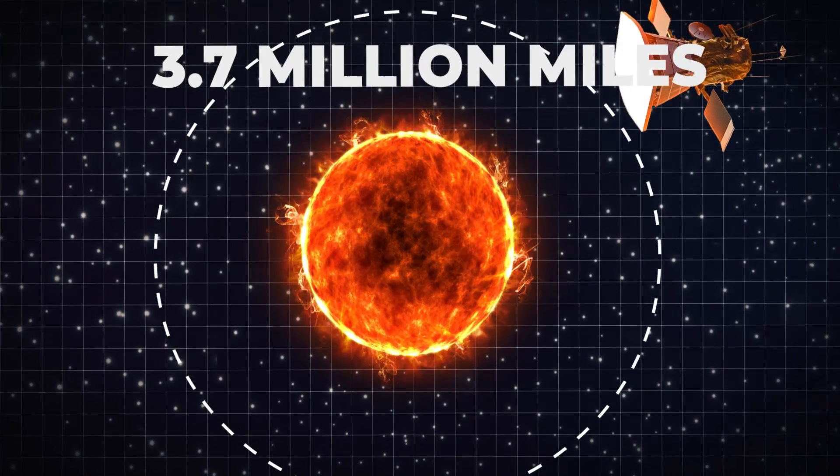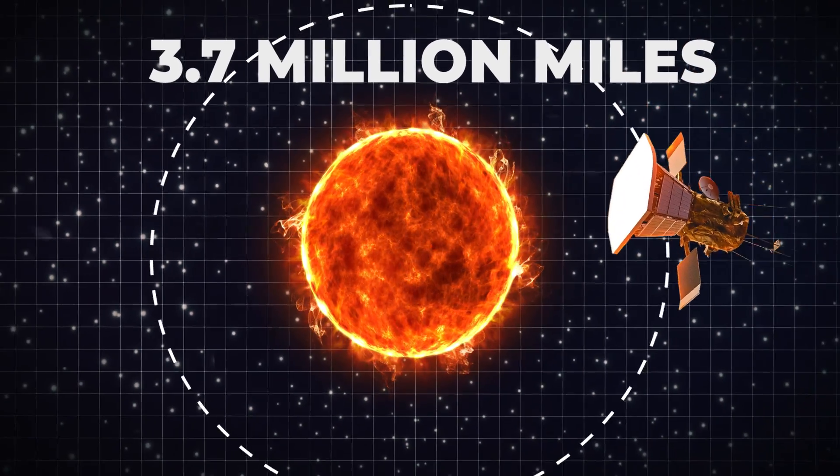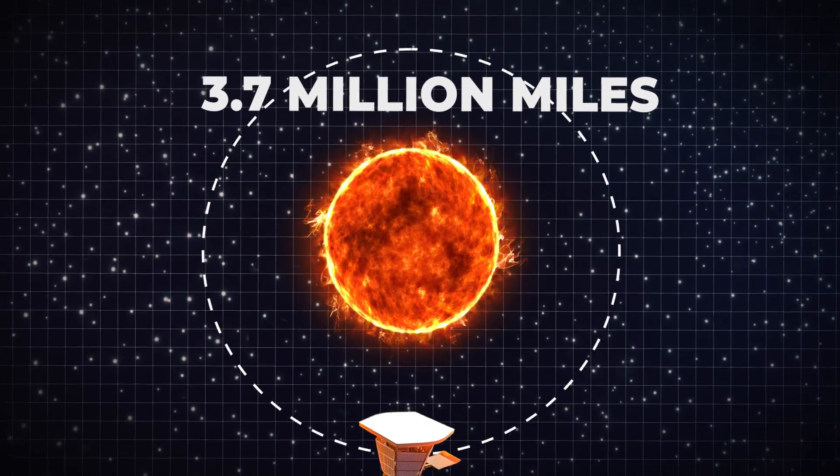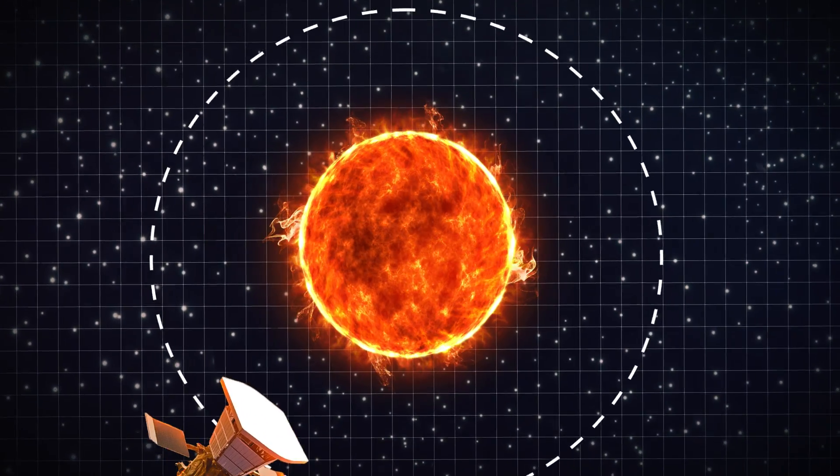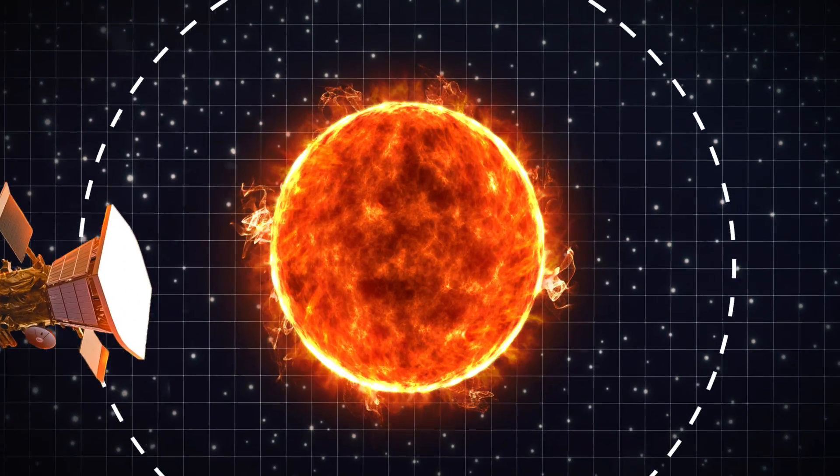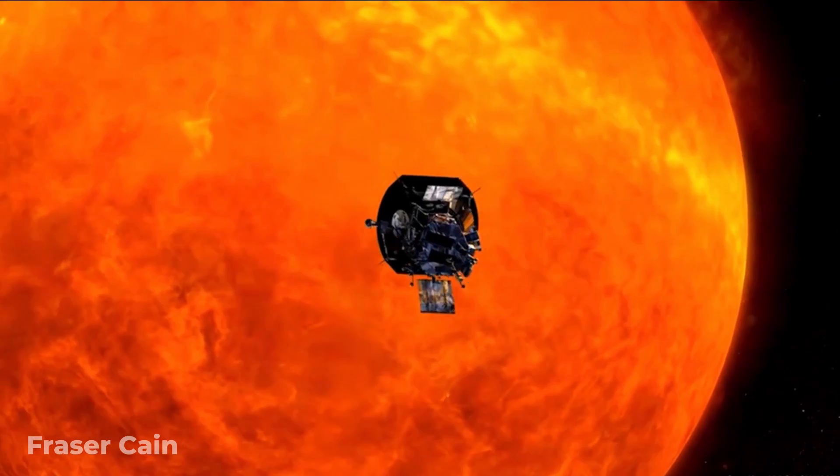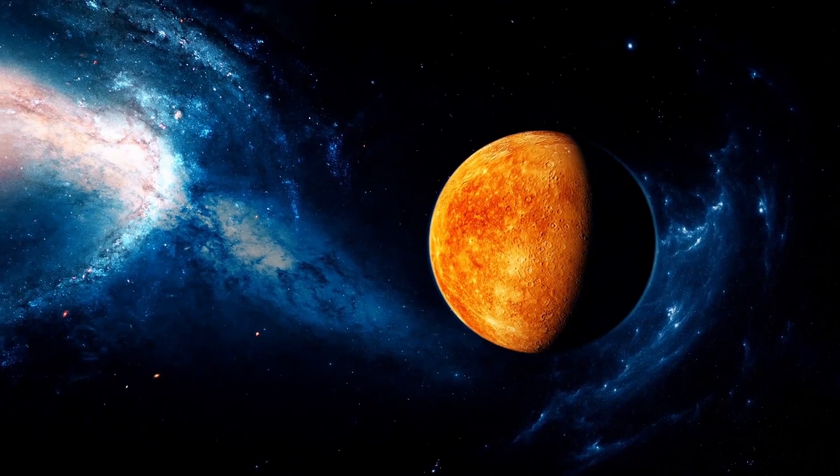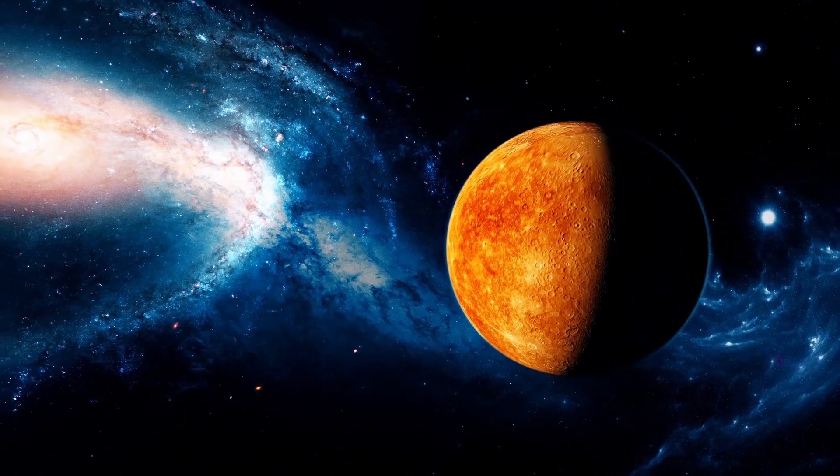3.7 million miles. That's how close Parker is getting to the Sun. That might seem like a huge distance away, but it's incredibly close compared to anything that's come before it. In fact, it's eight times closer than any previous spacecraft, and nearly nine times closer than the planet Mercury.